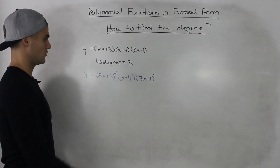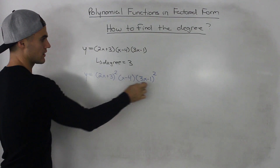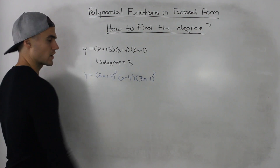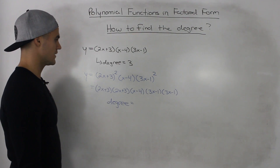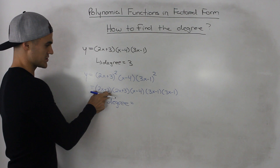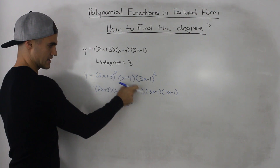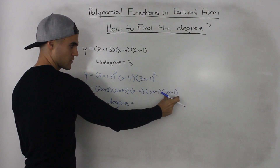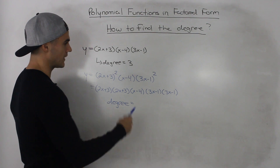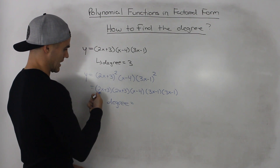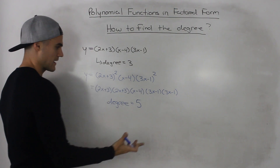For our next example, what if we took this same polynomial and attached an exponent of 2 to the (2x + 3) bracket and squared the (3x - 1) bracket as well? We could rewrite that as (2x + 3)(2x + 3) times (x - 4) times (3x - 1)(3x - 1). Then it's the same thing — count the x's: 1, 2, 3, 4, 5 — so the degree would be 5.